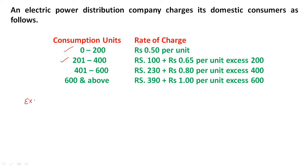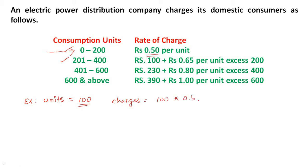Let us take an example. Suppose the number of units is equal to 100. This falls in the first range, so charges equal 0.50 per unit. That is 100 units into 0.50, which equals 50 rupees.